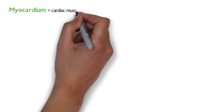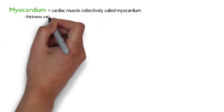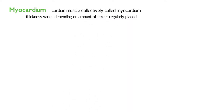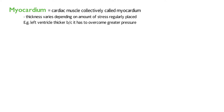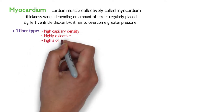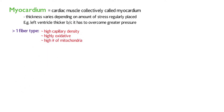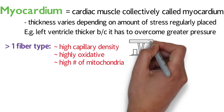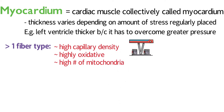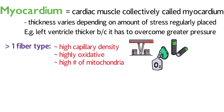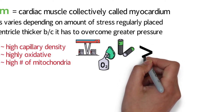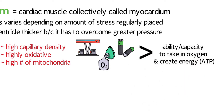The heart is composed of cardiac muscle, collectively called the myocardium. The thickness of the myocardium varies depending on the amount of stress regularly placed on it — for example, the left ventricle is thicker because it has to overcome greater pressure. Cardiac muscle has a high capillary density, is highly oxidative, and has a high number of mitochondria. High capillary density allows for greater gas exchange; being highly oxidative allows fibers to utilize oxygen for energy; and the high number of mitochondria enables ATP production using oxygen. Since the heart is constantly working, it needs the ability to quickly take in oxygen and create energy to function.